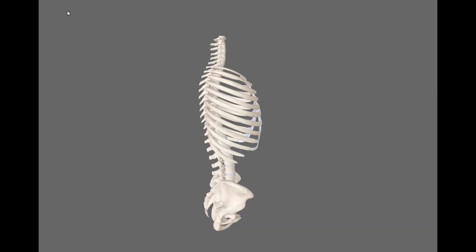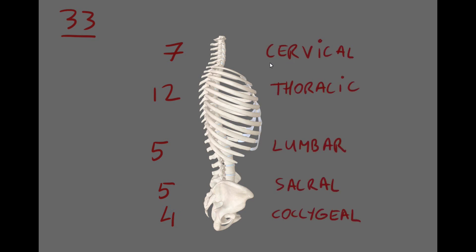The vertebral column usually consists of 33 vertebrae: 7 cervical, 12 thoracic, 5 lumbar, 5 fused sacral, and usually 4 coccygeal vertebrae that also frequently are fused. So that's cervical, thoracic, lumbar, sacral, and coccygeal.